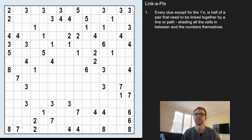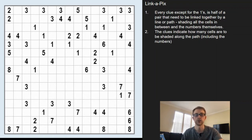The clues indicate how many cells are to be shaded along the path. So if you have a ten clue, it links with another ten clue and shades ten cells. If you have a five clue, it links with another five clue shading five cells in between, and the clue itself counts as one of the cells.